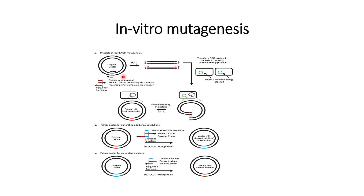The inner circle and outer circle represent the original vector shown here. The top and bottom of the original vector show primers with the desired mutation. The region to be mutated is highlighted in red in the original vector, and the forward and reverse primers carry the desired mutation.